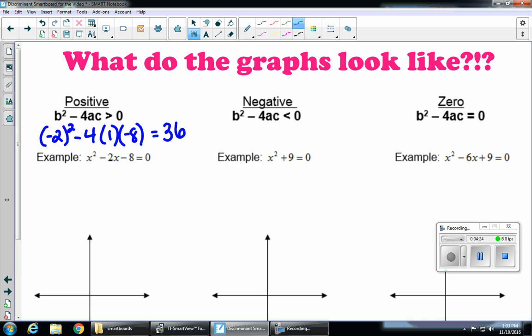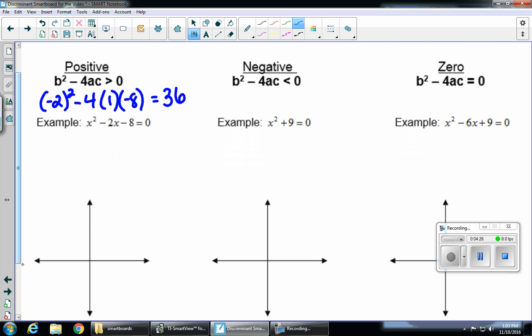But if we take a look at this equation, this is a factorable quadratic. If I wanted to factor this, I would get x and x, a minus, and a plus. And I'm looking for the factors of 8, so I have 4 and 2.